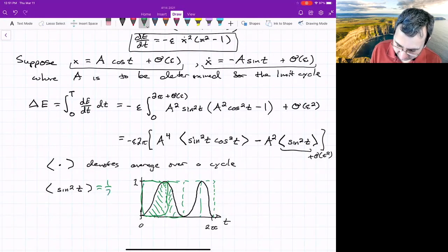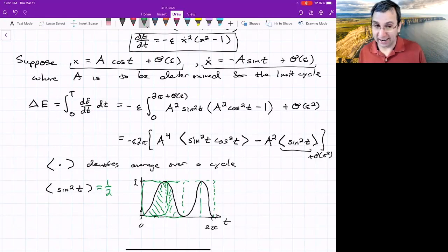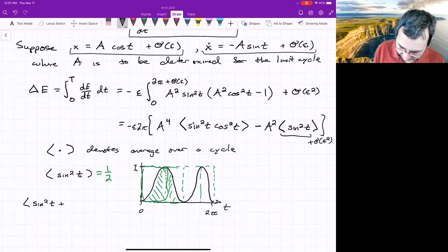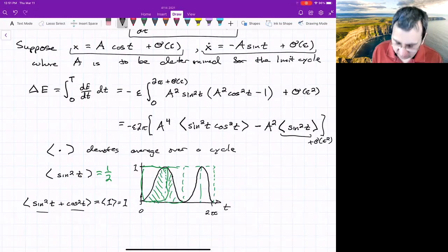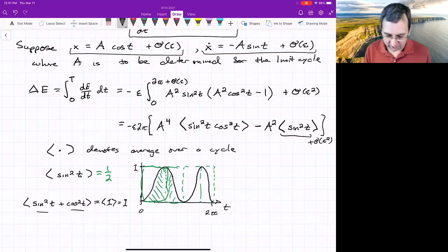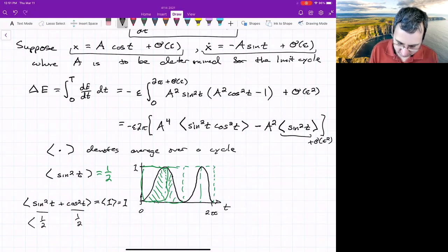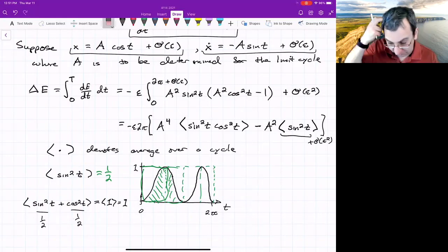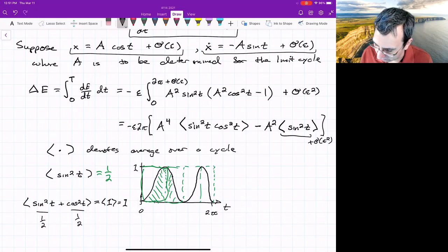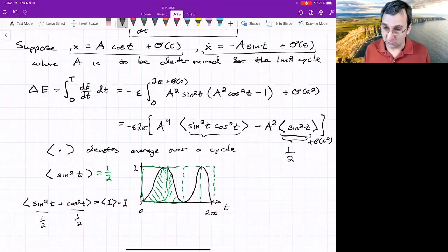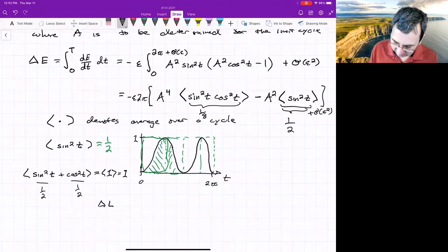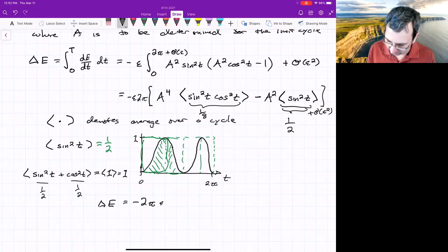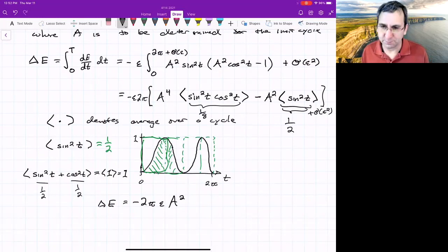Another way to do this: the average of sine squared t plus cosine squared t, that's the average of a function that equals one, which is equal to one. And sine squared t and cosine squared t are basically the same shape. They're just shifted a little bit. So both of them are one half. You could do something similar for sine squared cosine squared. This ends up being one eighth. So we've got delta E is equal to minus two pi epsilon A squared times (A squared over eight minus one half).